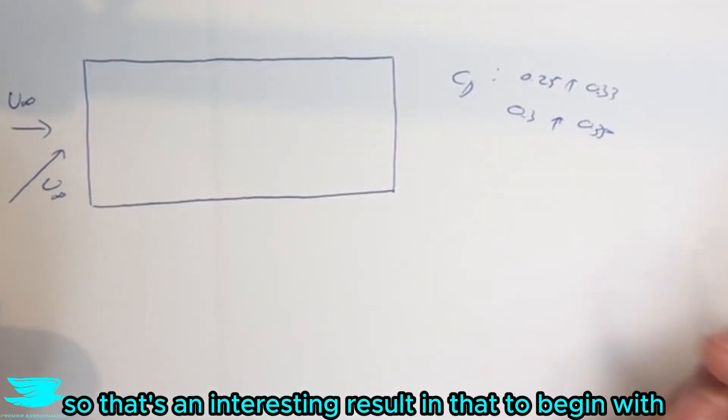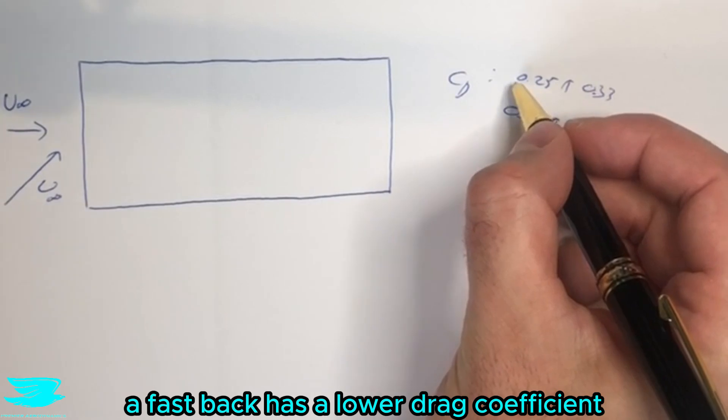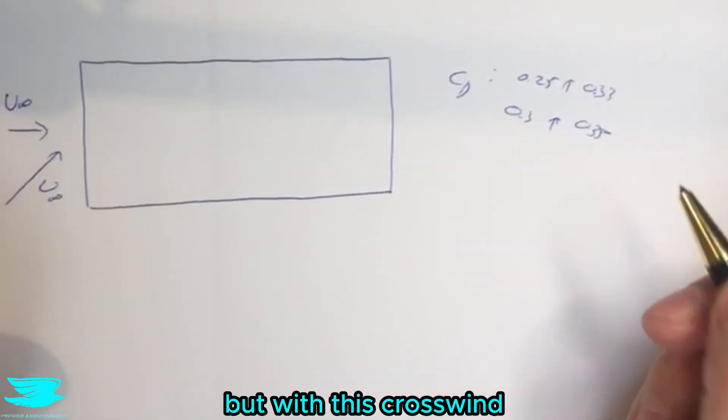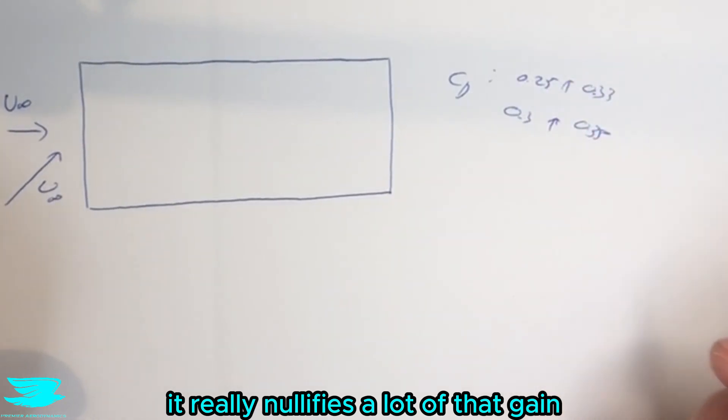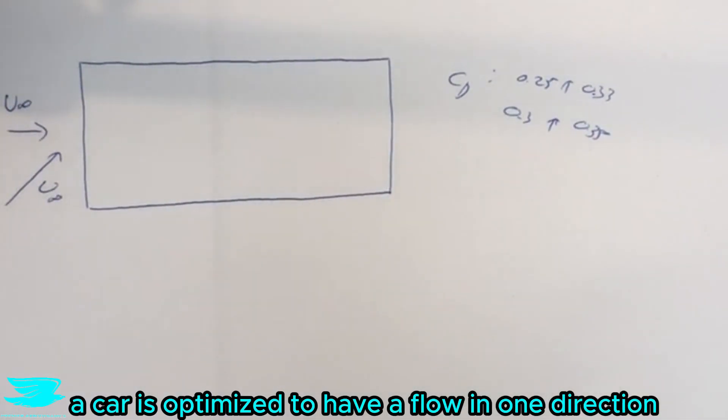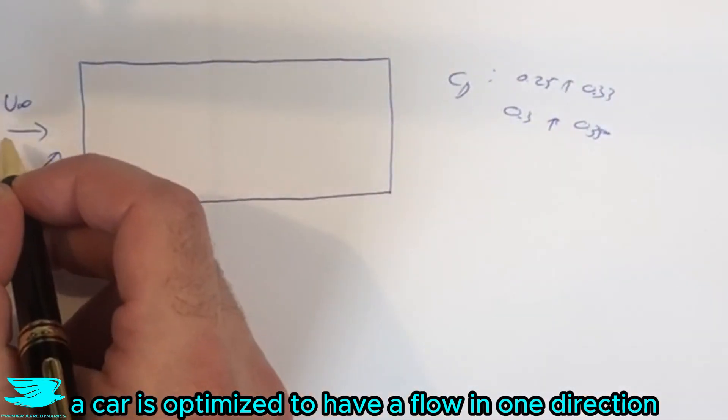So that's an interesting result in that to begin with a fastback has a lower drag coefficient by a long way, but with this crosswind it really nullifies a lot of that gain. And that's quite intuitive because when you think about it, a car is optimized to have a flow in one direction.